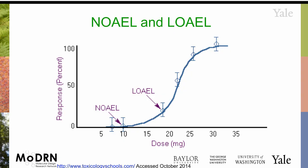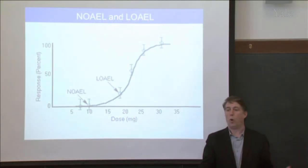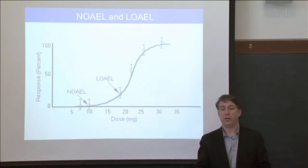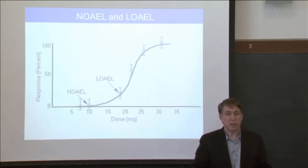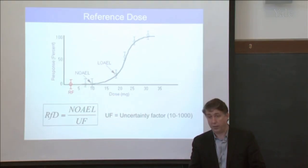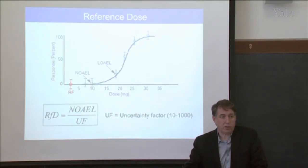On the dose-response curve — no effect, no response, actual data point — this is your NOAEL. LOAEL is the lowest point at which there was an observed toxic effect. These two data points are so important because they are the jumping-off points for setting standards — standards by which you can be exposed to something. That's called the reference dose. The reference dose is what you'll encounter when looking at what is considered acceptable exposure to something.